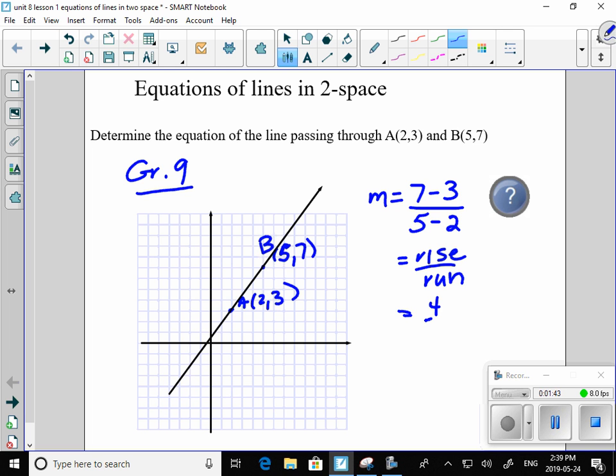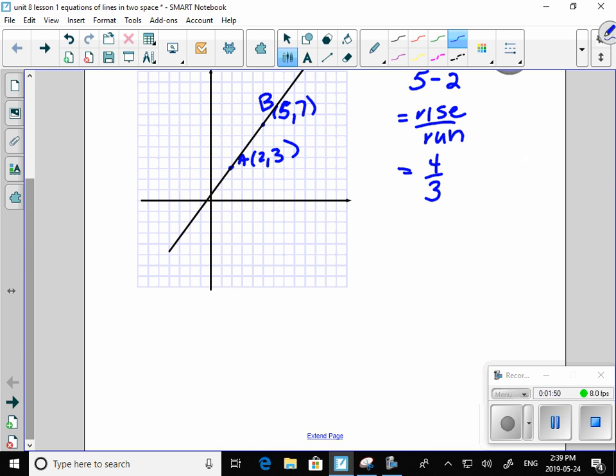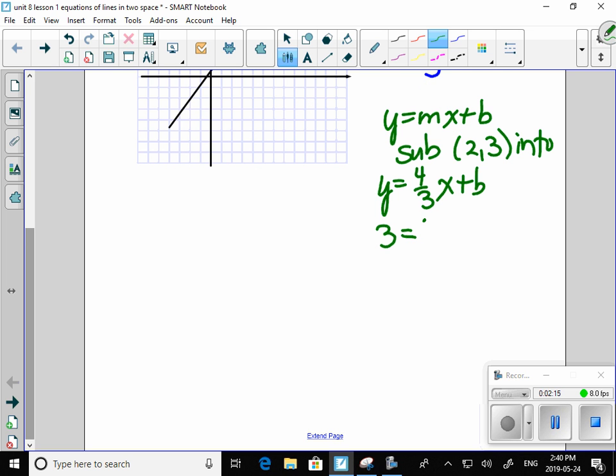So my slope would be 4 over 3 for this line. When we asked you to do the equation of a line, we did it generally in slope y-intercept form. And we would substitute a point, your choice, into the line where we know the slope, so that we can solve for the y-intercept.